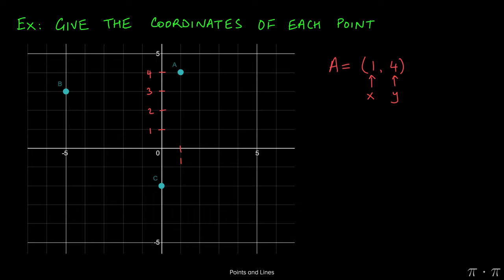If we go to the right on the x-axis, that's always a positive x-value. If we go to the left on the x-axis, that's always a negative x-value. Similarly, if we go up on the y-axis, it's always going to yield a positive y-value. And if we go down on the y-axis, it's always going to give us a negative y-value.